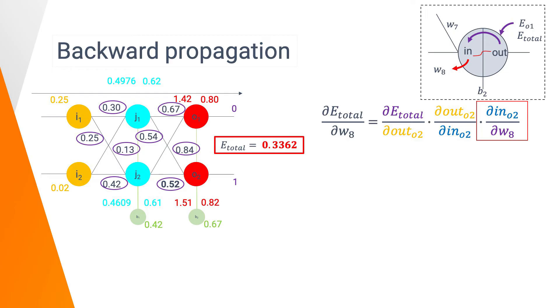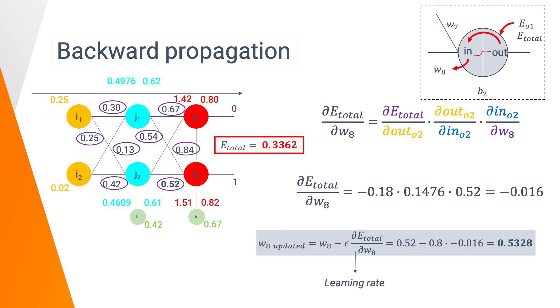And finally, we need to retrieve the impact of W8 on the input of O2. To do so, we took the formula of the input of O2 that we previously used and we derivate the formula with respect of W8. And we only got the output of the neuron G2, which is 0.71. So, by combining all those terms, we can retrieve that the partial derivative of E total with respect of W8 is minus 0.016. Now, we can calculate the updated value of W8, which is the value of W8 minus the learning rate, which multiplies the partial derivative we just calculated. And we obtain a new value of 0.3328 to compare to the previous one of 0.52.